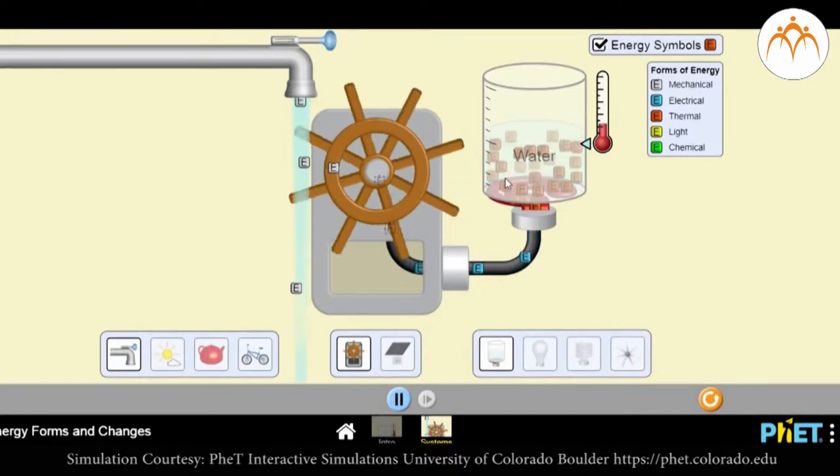In this simulation, falling water turns the wheel. As the electrical generator is attached to the wheel, mechanical energy is converted into electrical energy. This energy is then applied to the heater to boil water, resulting in conversion of electrical energy into thermal energy.